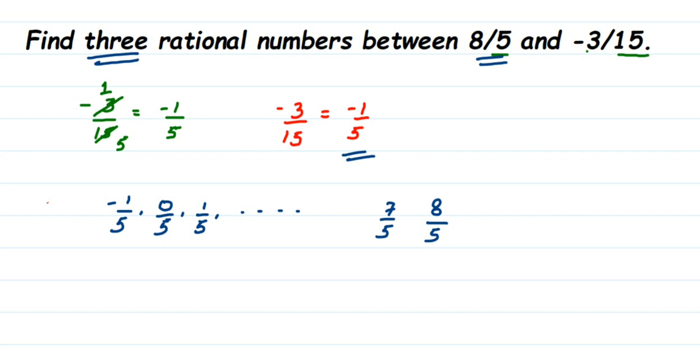I can pick any three in between. Don't include -1/5 and don't include 8/5. Excluding these two, you can take any three numbers and write them down. So three rational numbers between -3/15 and 8/5...